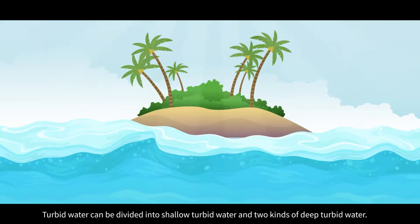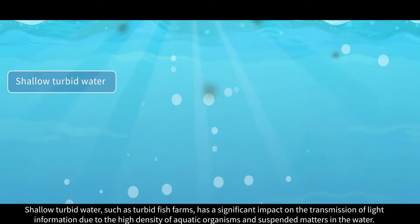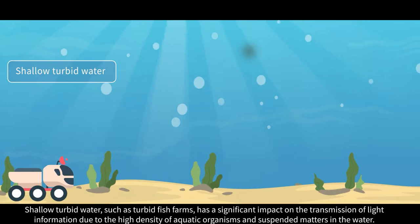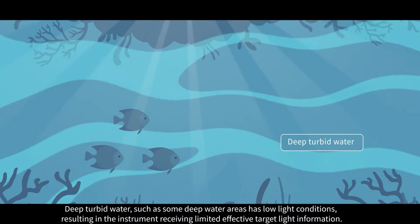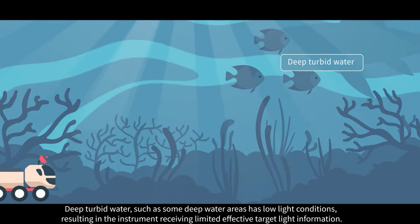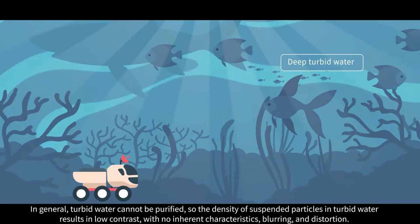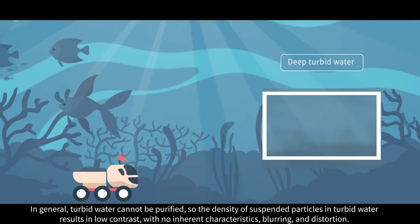Turbid water can be divided into shallow turbid water and deep turbid water. Shallow turbid water, such as turbid fish farms, has a significant impact on the transmission of light information due to the high density of aquatic organisms and suspended matters in the water, leading to significant image distortion. Deep turbid water, such as some deep water areas, has low light conditions, resulting in the instrument receiving limited effective target light information. In general, turbid water cannot be purified, so the density of suspended particles results in low contrast, with no inherent characteristics, blurring, and distortion.